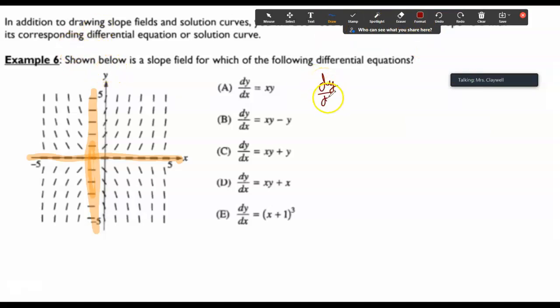So dy over dx equals 0 when x equals negative 1. So what this means is x plus 1 is a factor.